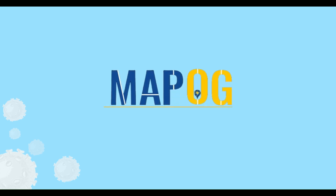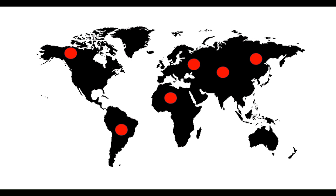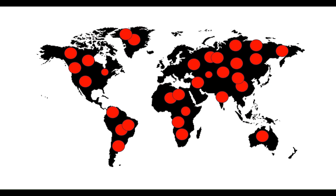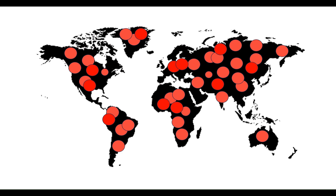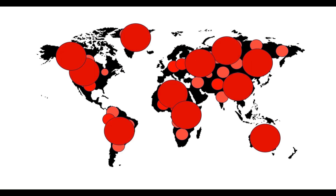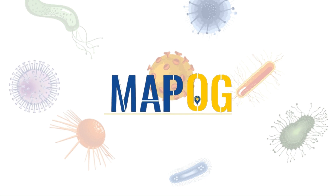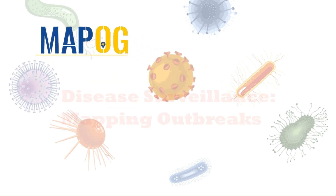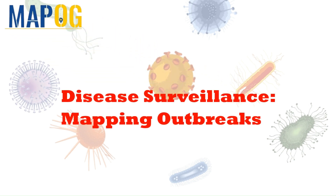Hello, all. Welcome to MapOG, where mapping is made simple. An outbreak — a sudden surge of illness — emerges unpredictably, threatening lives and disrupting communities. Today, we are exploring how MapOG can be leveraged in disease surveillance by delineating disease-affected areas and protecting the community.